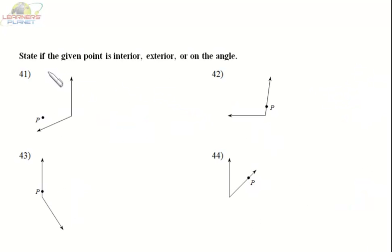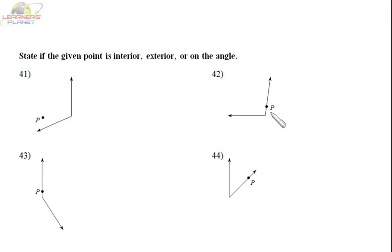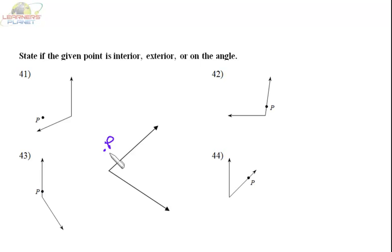In this question, state if the given point is interior, exterior, or on the angle. We see the angle is formed here, and P is coming inside the angle, so it is interior. Here P is on the angle. Here also P is on the angle. Here also P is on the angle. And here you can see the point P is exterior to the angle.